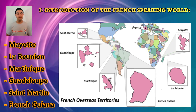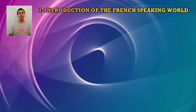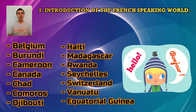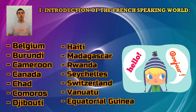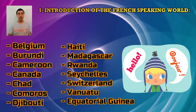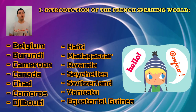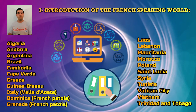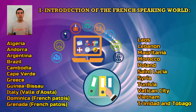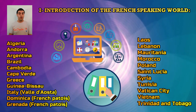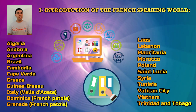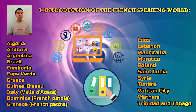French is also an official language in French territories, and it shares official status with one or more other languages in countries like Canada, Belgium, and Switzerland. The last list contains countries where French is not an official language but has an important role — in schools, administration, or government. For example, in Algeria, French is not the official language but is used in administration and especially in higher education at universities.